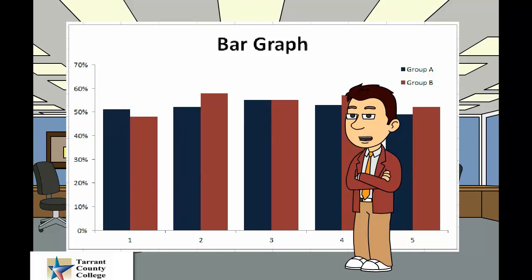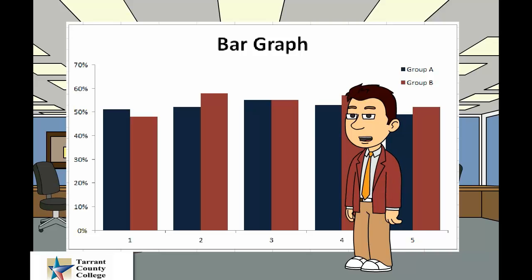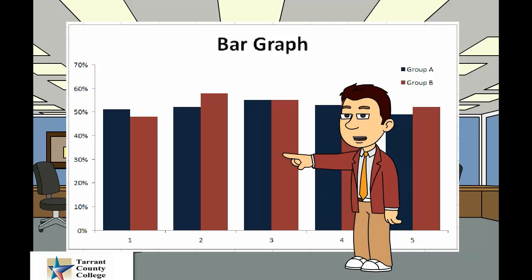Bar graphs are used to compare things between different groups or to track changes over time. However, when trying to measure change over time, bar graphs are best when the changes are larger. Bar graphs are used for categorical variables when comparing different categories, and are best for visually comparing categories and for easily recognizing the top or bottom view categories.